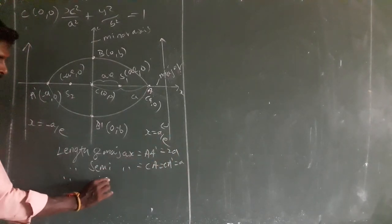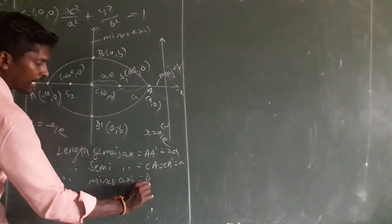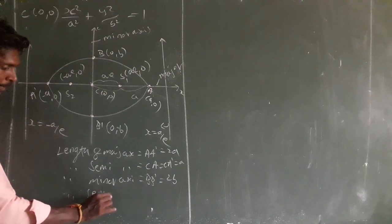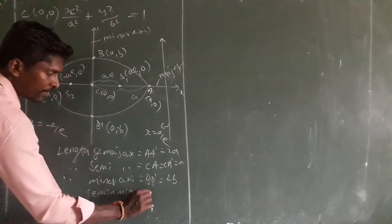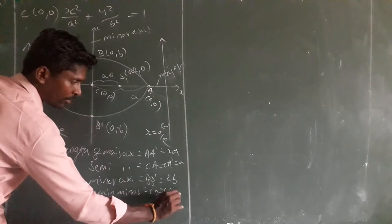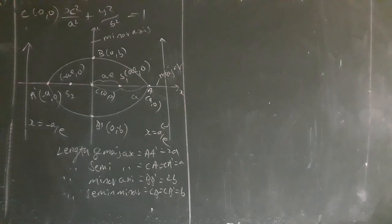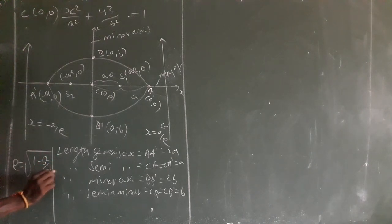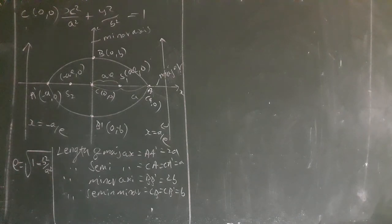Then length of minor axis: marked as B and B dash, that is equal to 2b. So length of semi-minor axis — that is CB or CB dash equal to b. Then next we want to know the value of e. E equals square root of 1 minus b squared by a squared.